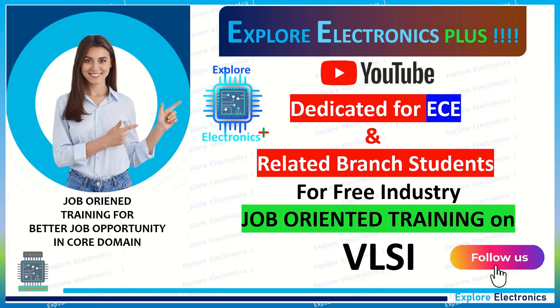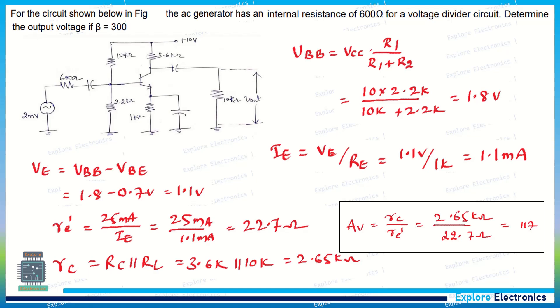Hey guys, welcome back to Explore Electronics. In this video, let's see the solution to a problem. For the circuit shown in the figure, the AC generator has an internal resistance of 600 ohms for a voltage divider circuit. Determine the output voltage if beta equals 300. Here, as we've seen in the previous video, the same kind of problem.